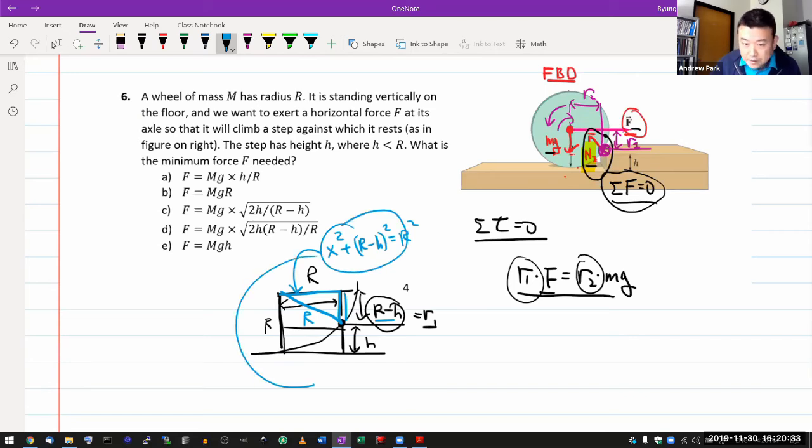So X squared plus R minus H squared is equal to R squared. And when you work out this algebra, it becomes simpler than you might be afraid that it is. So it's X squared plus, let me expand this out. R squared minus 2RH plus H squared is equal to R squared. So you see that R squared cancel out. And you can get a reasonably simple expression for X, which is square root of 2RH minus H squared.